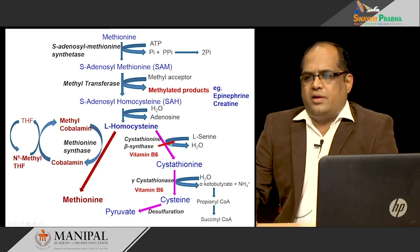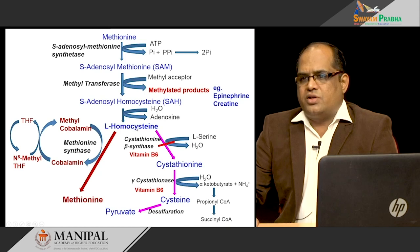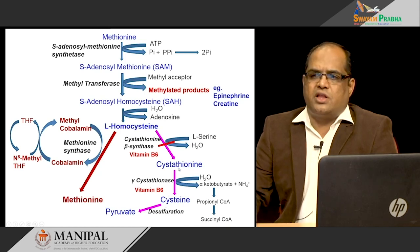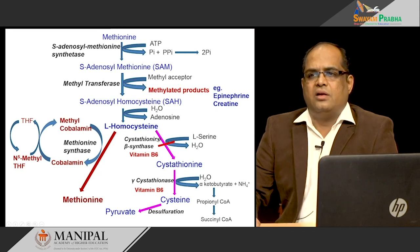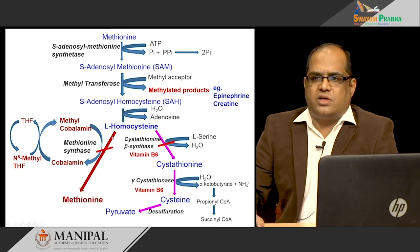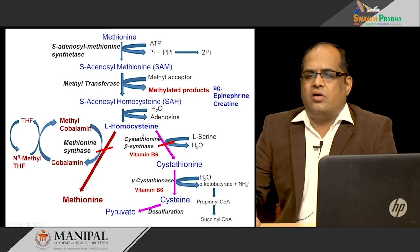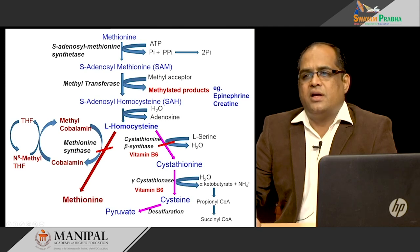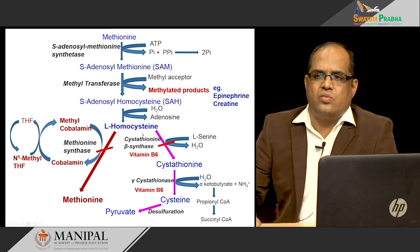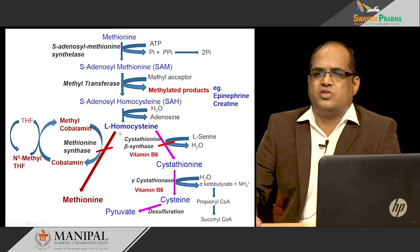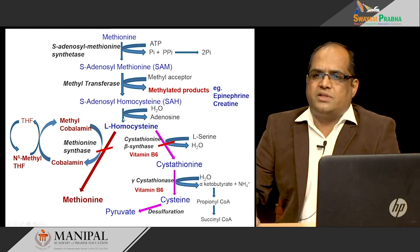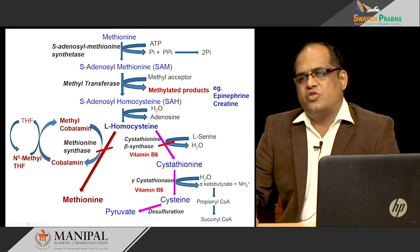Any block in the conversion of homocysteine to cystathionine and cysteine, or in the conversion of homocysteine back to methionine, will increase blood homocysteine levels, causing homocysteinemia and homocysteinuria. This is clinically very important because elevated homocysteine is directly associated with coronary heart disease, stroke, and many other disorders.